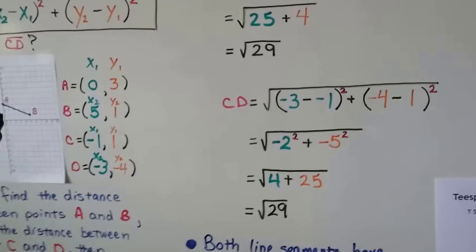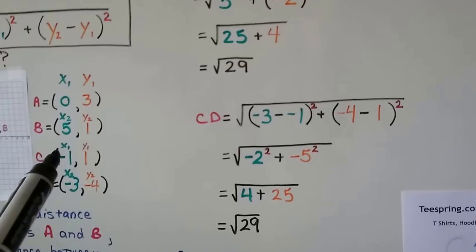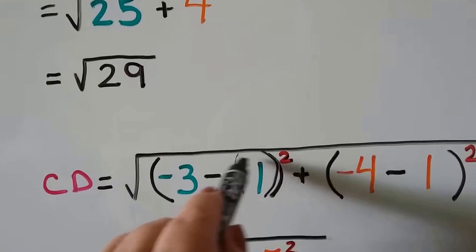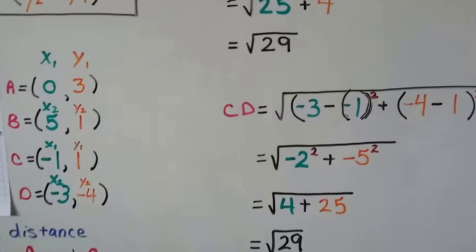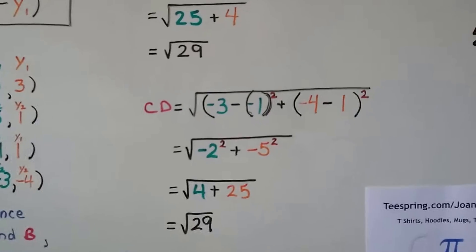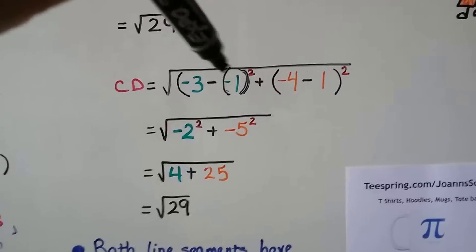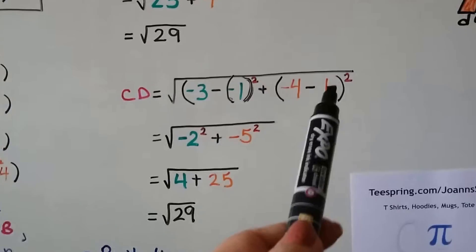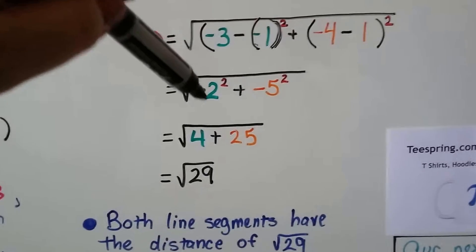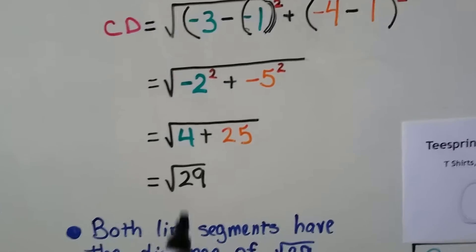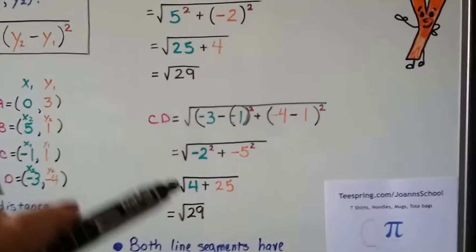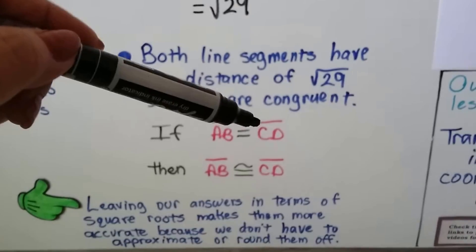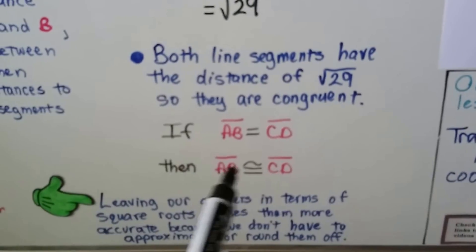For segment CD: (-3 - (-1))² + (-4 - 1)² = (-2)² + (-5)² = 4 + 25 = √29. Both segments have a distance of √29, so they are congruent. Since segment AB equals segment CD in length, segment AB is congruent to segment CD.